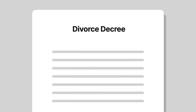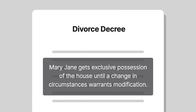When Dennis and Mary Jane subsequently divorced, the divorce decree gave Mary Jane exclusive possession of the jointly owned property until a change in circumstances warranted modification.